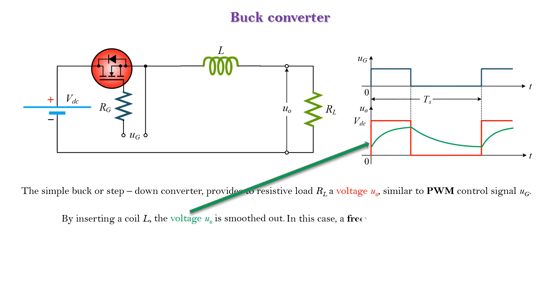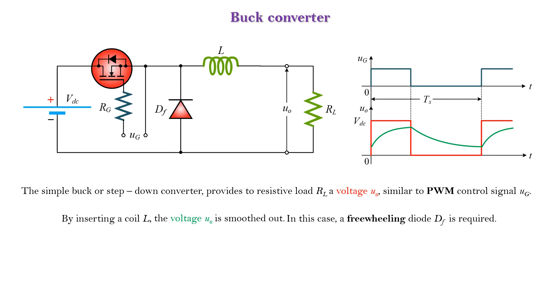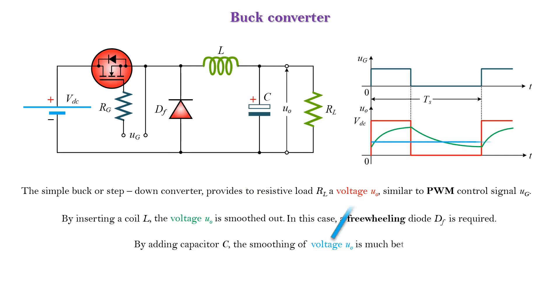In this case, a freewheeling diode DF is required. By adding capacitor C, the smoothing of voltage VO is much better.